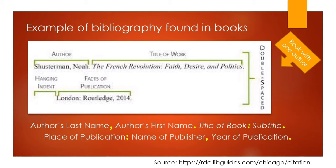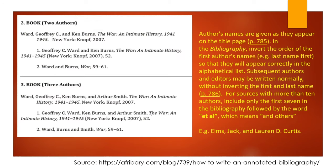For example: Schusterman, Noah. The French Revolution: Faith, Desire and Politics. London: Routledge, 2014. Meanwhile, for books with multiple authors — that means more than one author — the authors' names are given as they appear on the title page of the book. In the bibliography, invert the order of the first author's name so that they will appear correctly in alphabetical order.